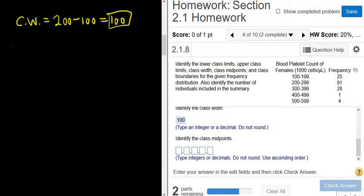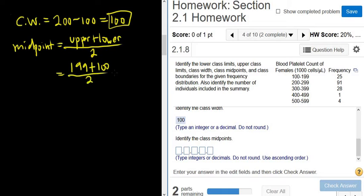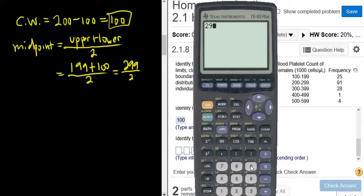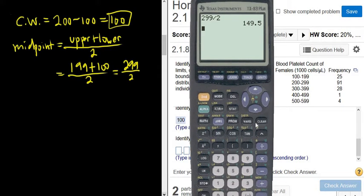Identify the class midpoints. So for the midpoints, there's a formula. The midpoint formula says you take the upper class limit plus the lower class limit and divide by 2. So that's going to be 299 divided by 2. So let's put it into the calculator. So 299 divided by 2, that's going to be 149.5. So 149.5. Okay, that's going to be our first midpoint.